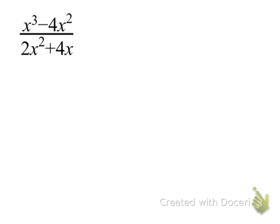Let's look at this next one. Again, we cannot cancel any x's in the numerator and denominator because they're part of terms being added. So we need to factor. What GCF do x³ and 4x² have in common? They both have at least x². When we factor that out, we're left with (x - 4).